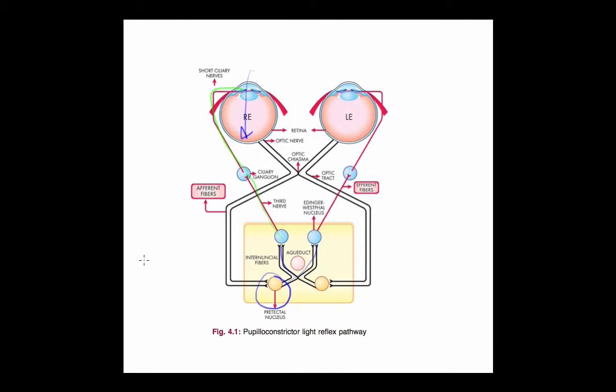Using this diagram, you should be able to understand a couple things. The first is that when you shine light in one eye, both should constrict. This is because signals from one side actually go to both sides.